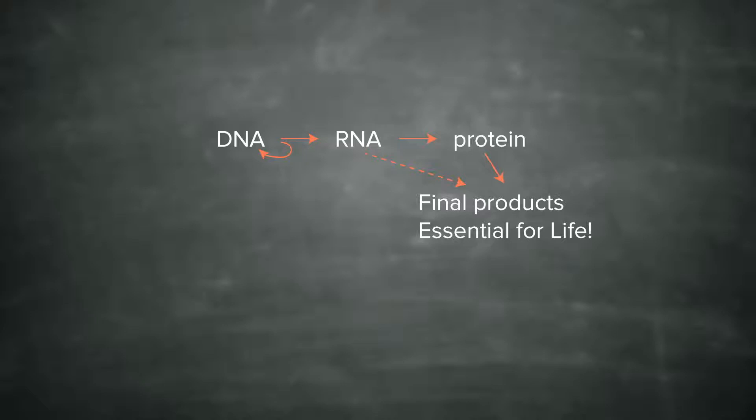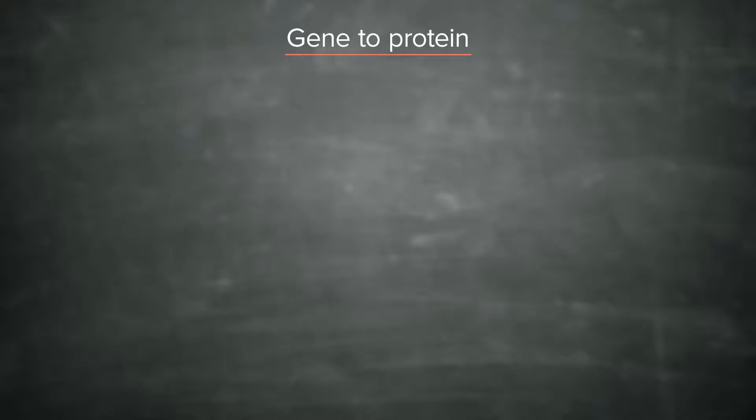Let's end off today's discussion by going through one more example from gene to protein. Let's start off with a piece of double-stranded DNA: 5 prime ATG, GAA, GCT. Just checking my notes here.